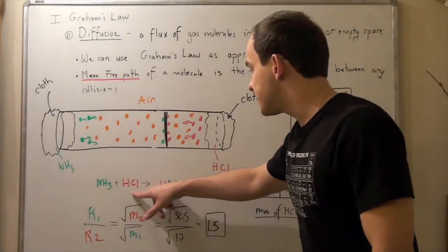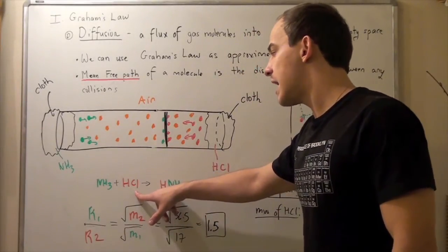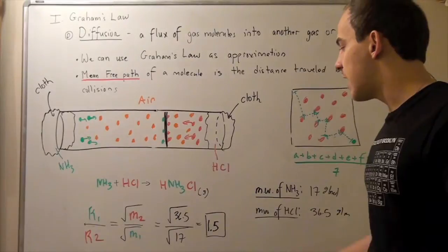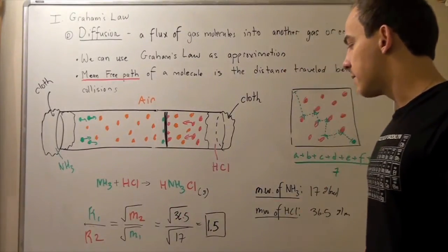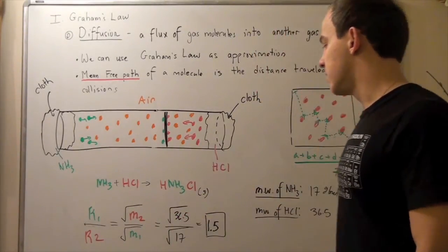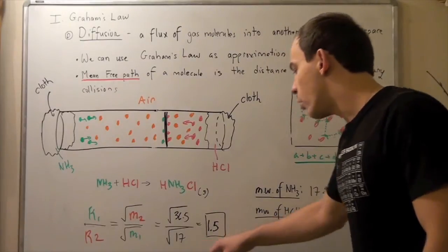What about this guy? Well, 1 plus 35.5 gives us 36.5. So 36.5 on top. We plug this into our calculator, and we get 1.5.